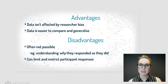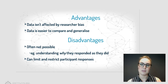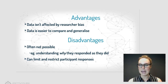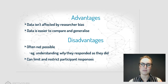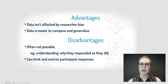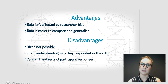The advantages of quantitative data are: number one, the data isn't affected by researcher bias — you're going to get that absolute accurate figure. It's also easier to compare and generalize. You can do a lot with statistics, put it in graphs and tables, and it's quite easy to compare, which is why often people are more drawn to numbers than to explanations.